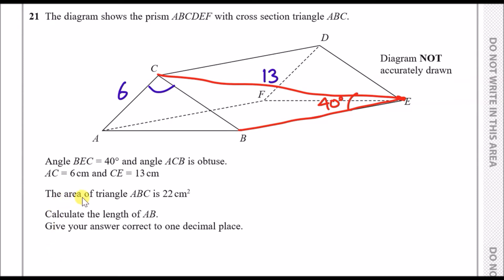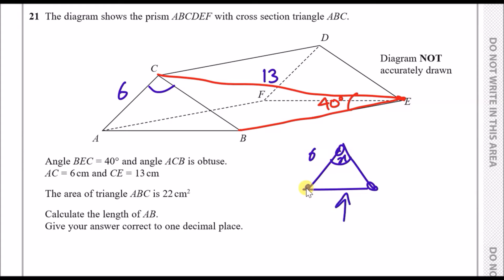Finally, they tell us that the area of triangle ABC — the front face — equals 22 centimetres squared. So I'll copy this triangle out and relabel it: we've got 6 over here, an unknown angle which is obtuse so we'll call that X, and the total area of the triangle is 22 centimetres squared.